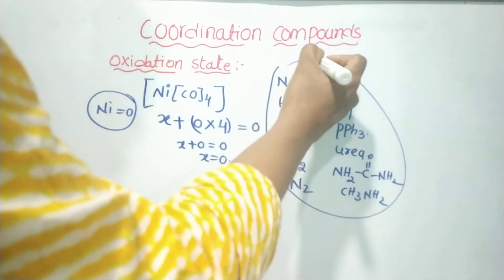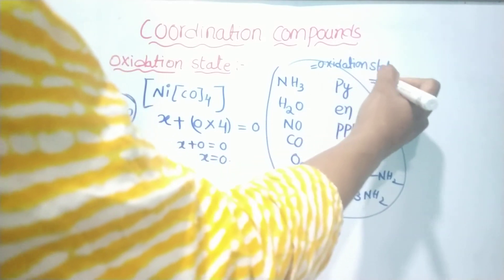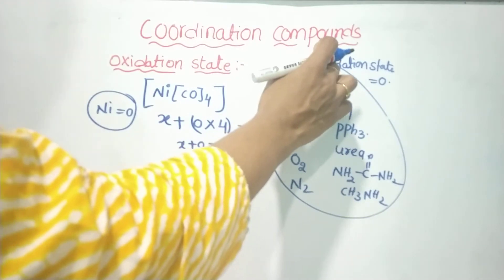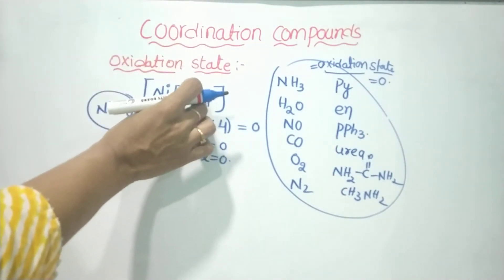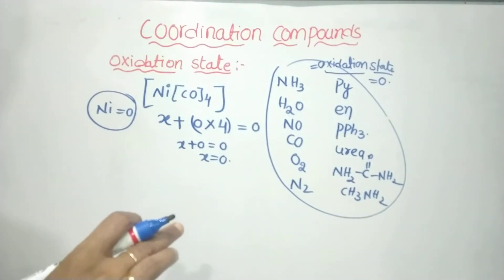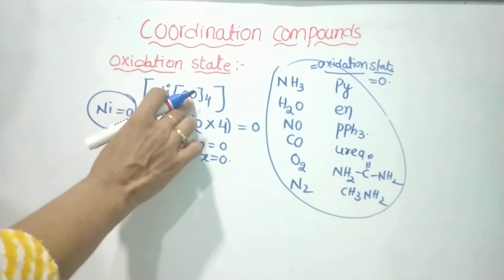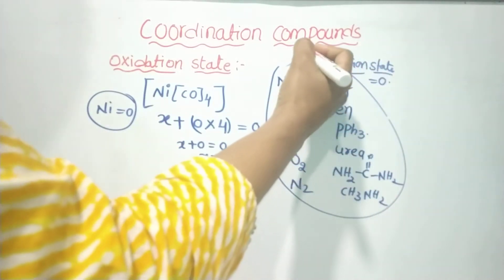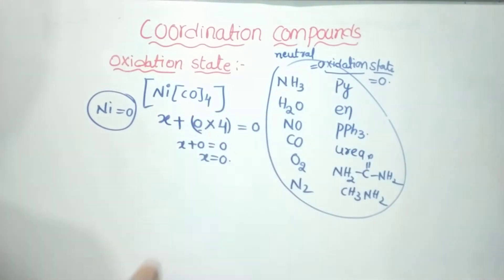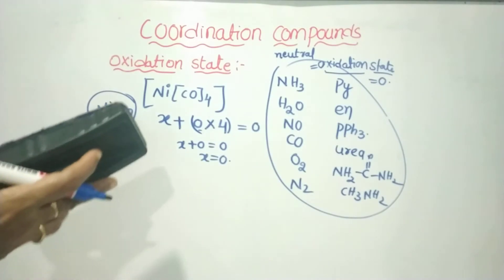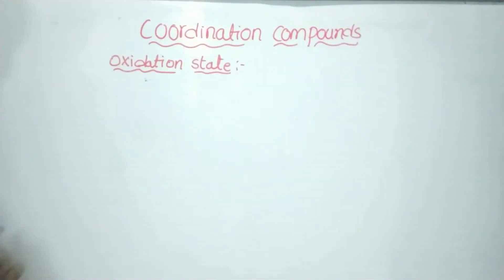For neutral ligands, the oxidation state is zero. When we determine the oxidation state of the central metal, neutral ligands contribute zero. We use the donor atoms to determine coordination number. Neutral ligands carry zero charge, so we assign them zero oxidation state.